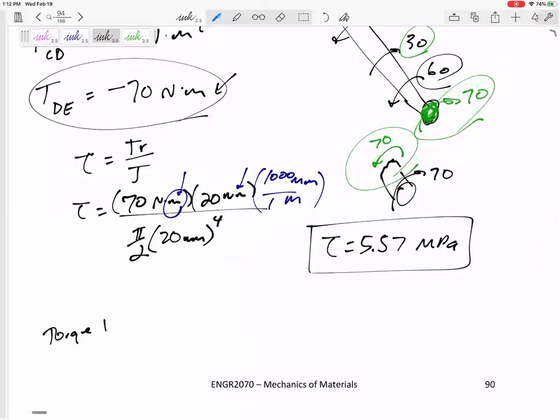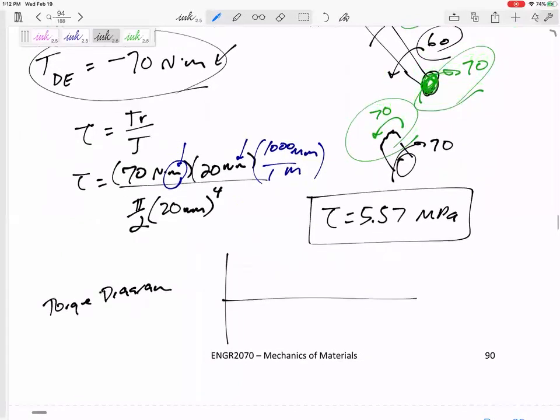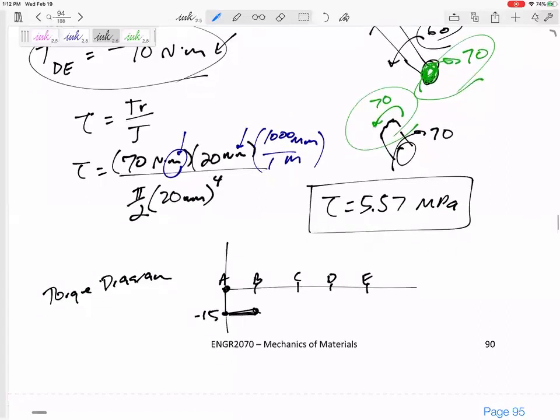Now, a torque diagram would show us the torque inside every section. And so it looked like this. The first section is negative 15 between A, B, C, D, E. So the first section, it's negative 15.